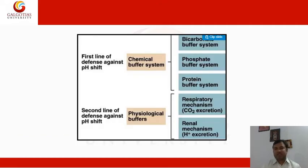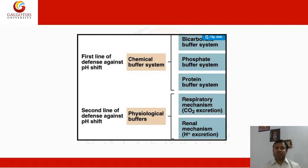Buffer can be categorized into two types: chemical buffer system and physiological buffer system. Chemical buffer system is considered the first line of defense against pH shift, while physiological buffer is considered the second line of defense. Chemical buffers include bicarbonate buffer system, phosphate buffer system, and protein buffer system. Physiological buffers include the respiratory mechanism and renal mechanism — meaning the kidneys and lungs also regulate pH.